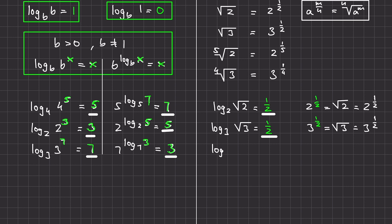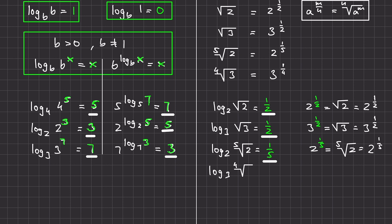What is log base 2 of the fifth root of 2? We ask: 2 raised to what power equals the fifth root of 2? The fifth root of 2 equals 2 raised to the power of 1/5, so log base 2 of the fifth root of 2 equals 1/5. What is log base 3 of the fourth root of 3? The fourth root of 3 equals 3 raised to the power of 1/4, so log base 3 of the fourth root of 3 equals 1/4.